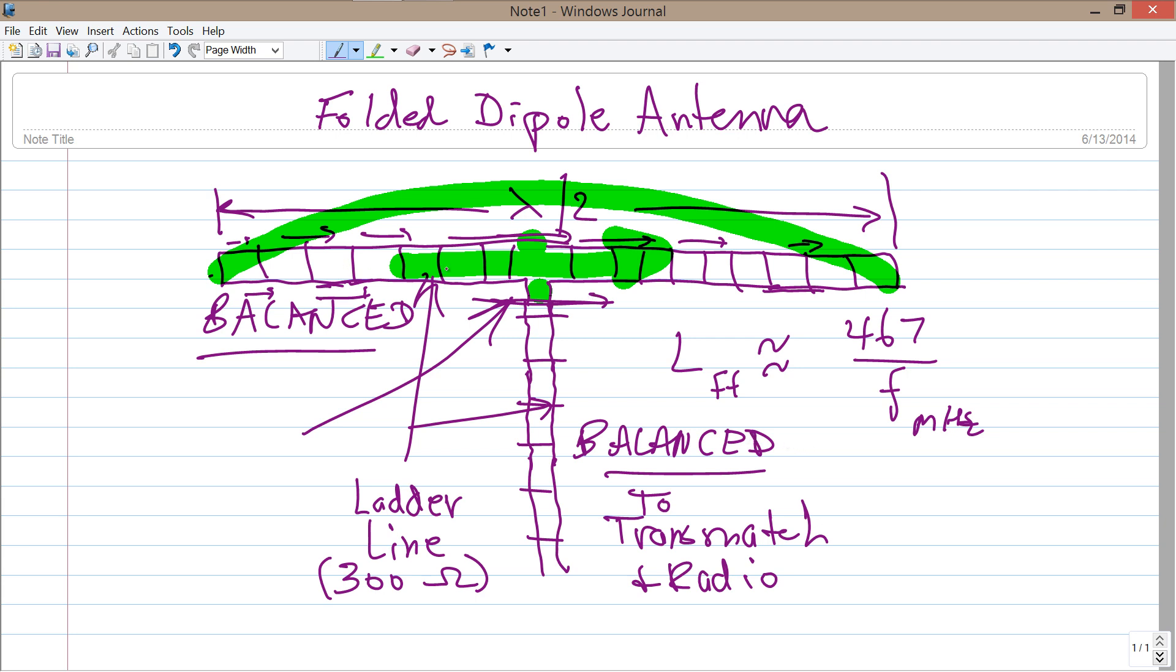But when you fold an antenna like this and feed it in only one of the conductors, in effect, what you're doing is getting only half of the current at this feed point that you would get at the dipole. The other half at the ordinary dipole, the other half is up here. Half the current is up here. Half the current is here.